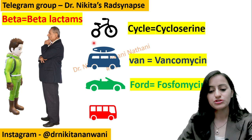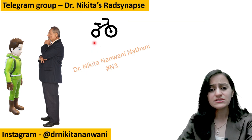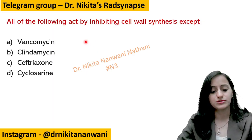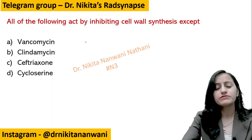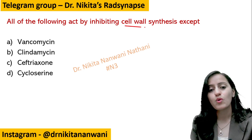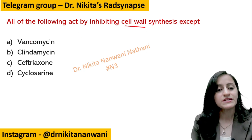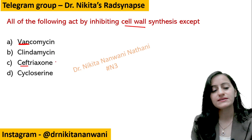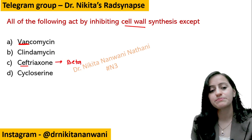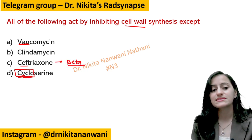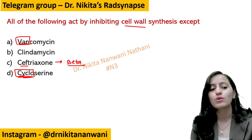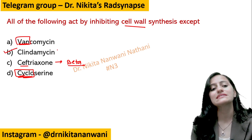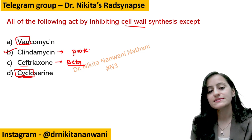Now let's go back to the question: all of the following act by inhibiting cell wall synthesis except? You have vancomycin, ceftriaxone — which is a cephalosporin, a beta-lactam — and cycloserine, which is the cycle. So all of these are cell wall synthesis inhibitors, except clindamycin.